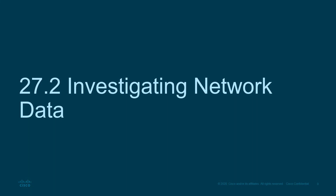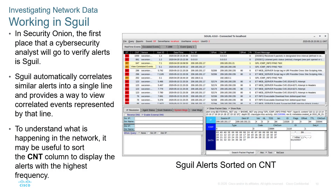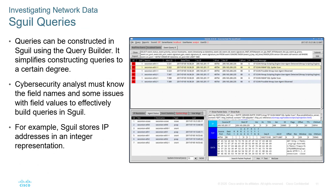The next section is investigating network data. That goes back to working with Squil, looking at the overall structure and looking in Security Onion so that we can start correlating similar alerts into a single line to provide a better view of what's going on. Looking at the CNT column will show the alert count. Squil queries can be constructed using the query builder, which simplifies constructing queries to a certain degree. An analyst will need to know how to do filtering and know the field names and field values to effectively build queries in Squil. We do have labs going through this, and they are crucial for understanding the Squil process. Note that Squil will store IP addresses in an integer representation instead of dotted decimal form.